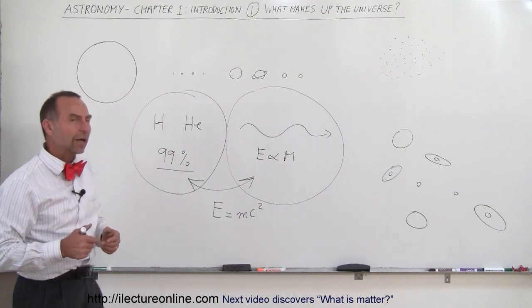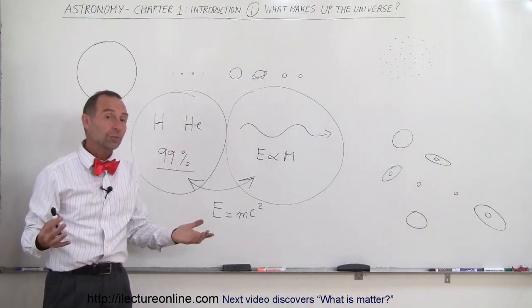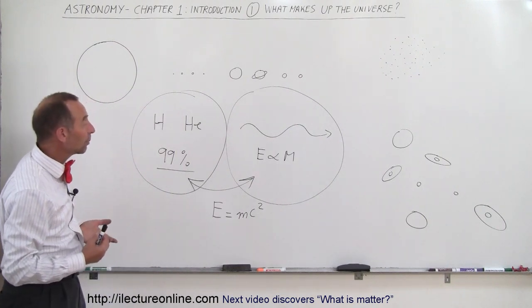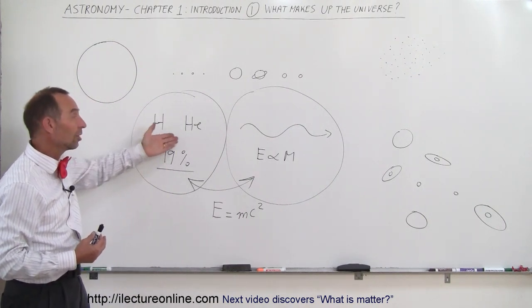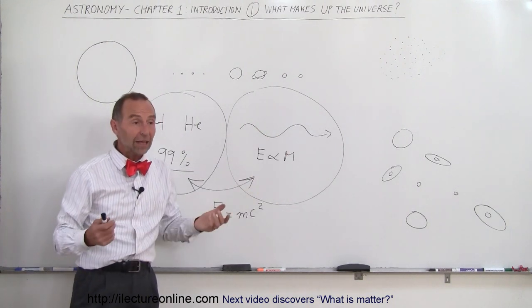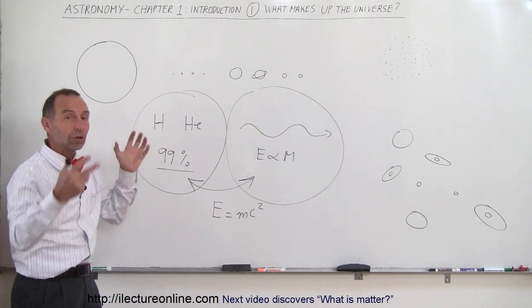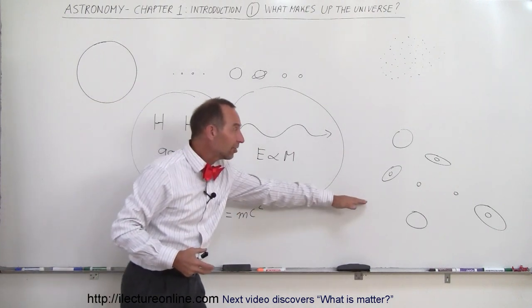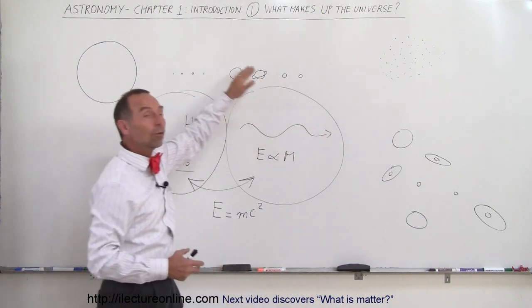If someone asks you what the universe is made out of, say it's primarily made up of matter, which is mostly hydrogen and helium, and energy in the form of electromagnetic radiation. Most of that matter tends to clump together into galaxies, stars, and planets.